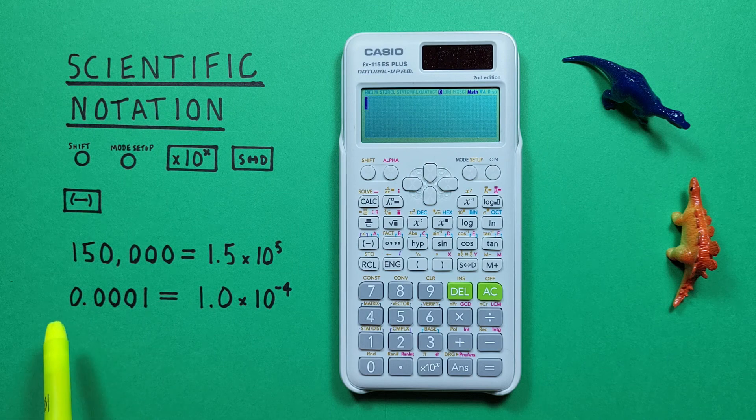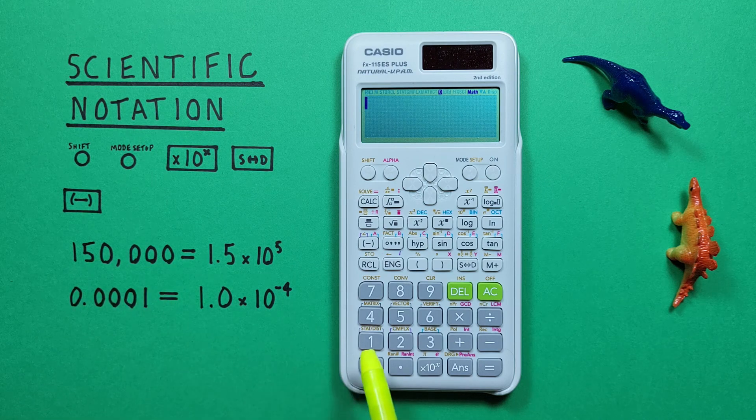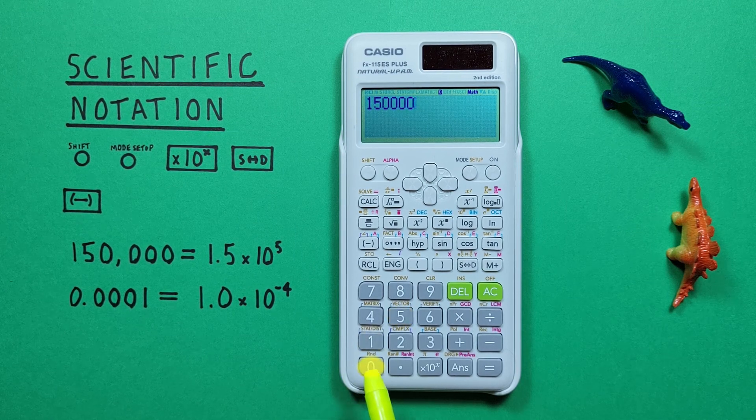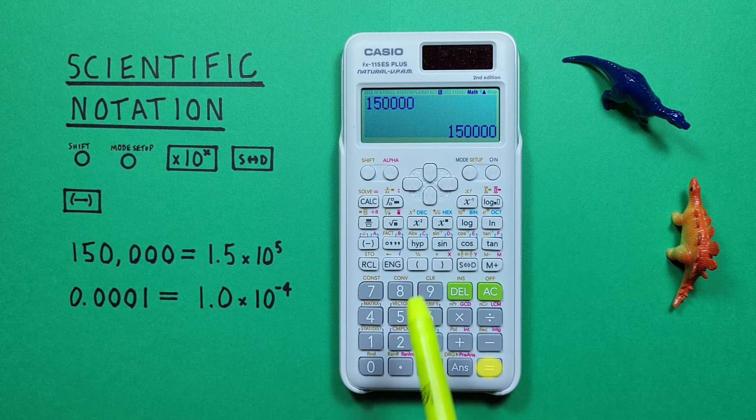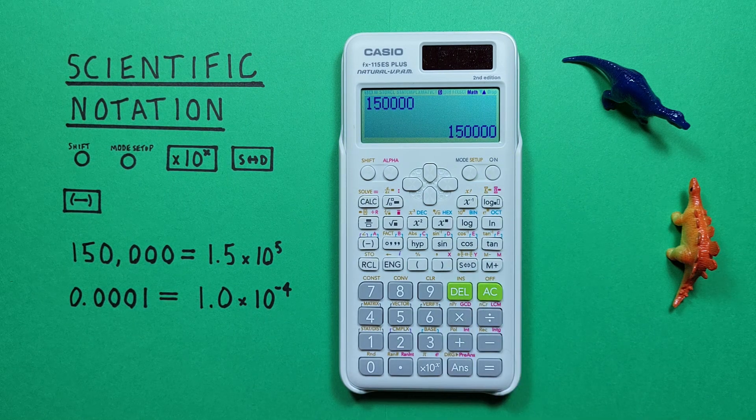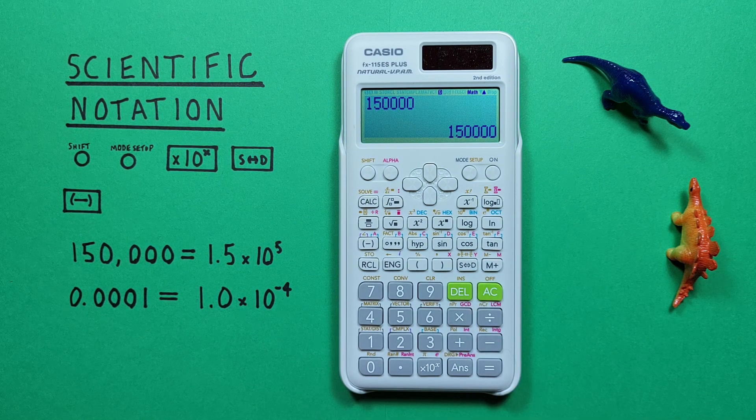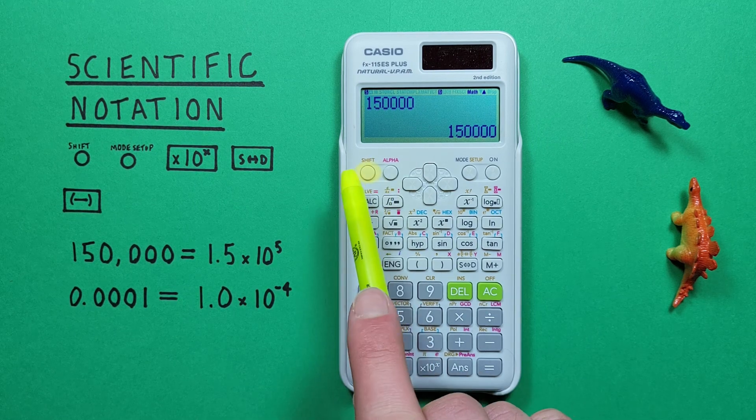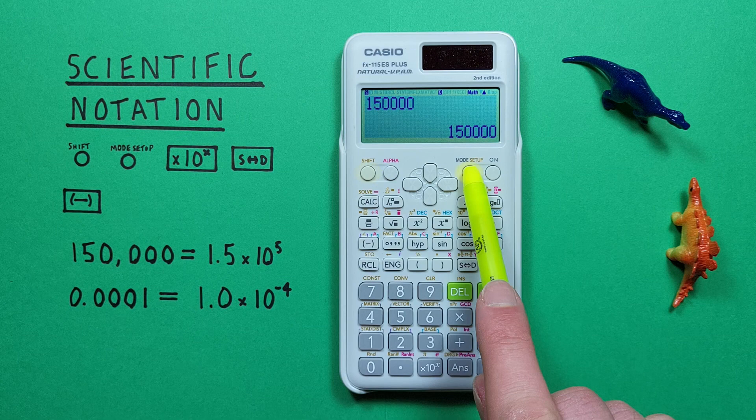Normally when we enter a number like 150,000 on our calculator and press equals, it displays it as we wrote it. But if we want our numbers displayed in scientific notation, like this, what we have to do is press shift and then the mode setup key.